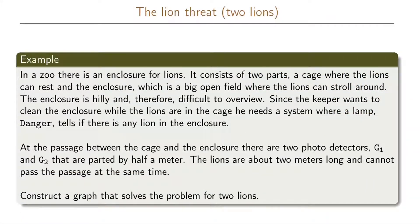In this example we're going to return to the lion threat, but this time we will have two lions instead of one. Recall from this problem that we have a zoo with an enclosure for lions, consisting of two parts: a cage where the lions can rest, and the actual enclosure where they can stroll around. This enclosure is a big open field and it is quite hilly, so the keeper will want a lamp that says danger when at least one of the lions is in the enclosure.